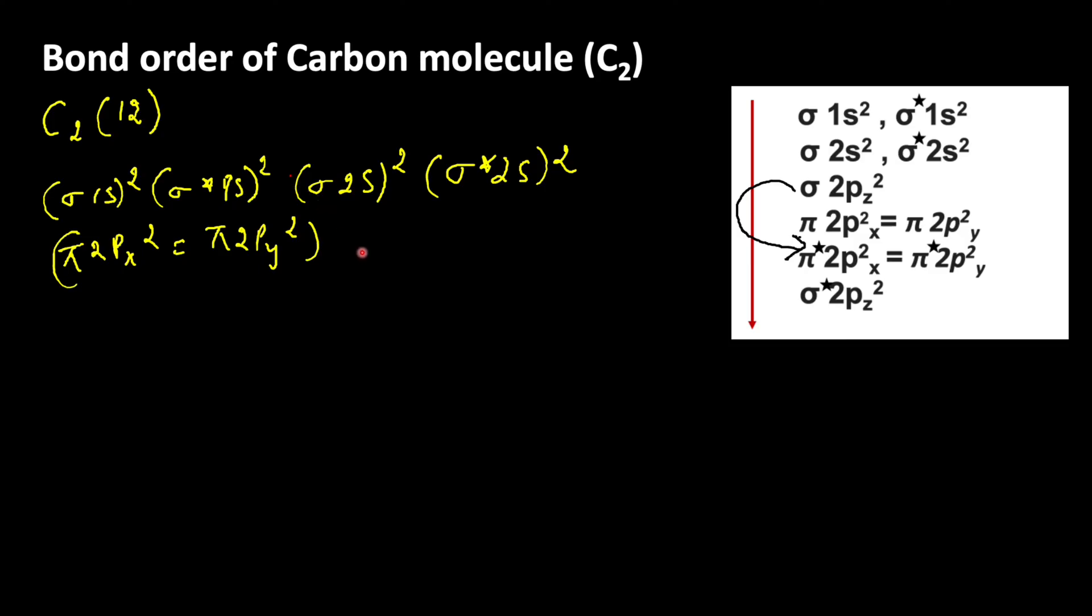Using this, let us write the bond order. Bond order is equal to Nb minus Na by 2. Nb is the number of bonding electrons, Na is the number of anti-bonding electrons.